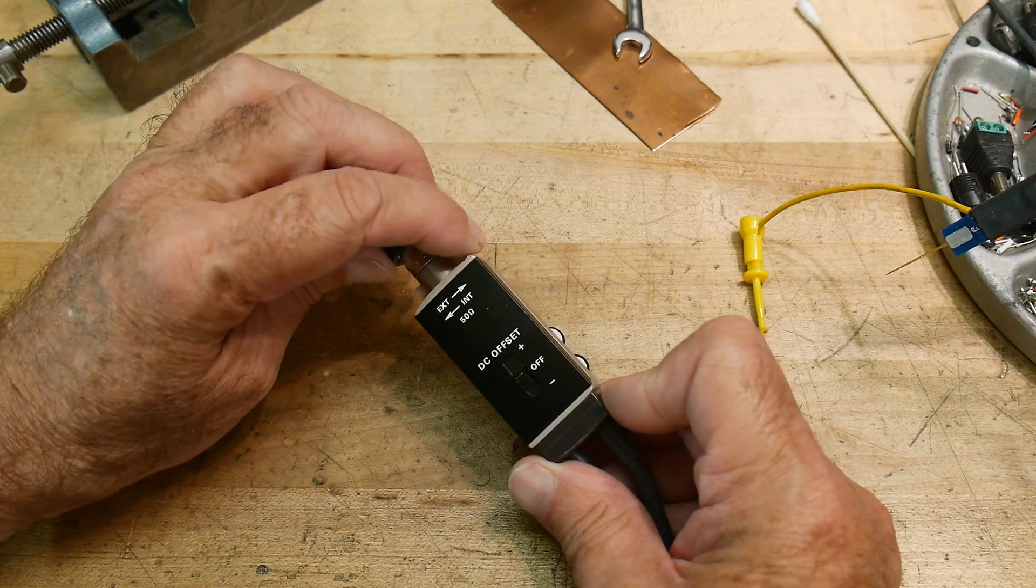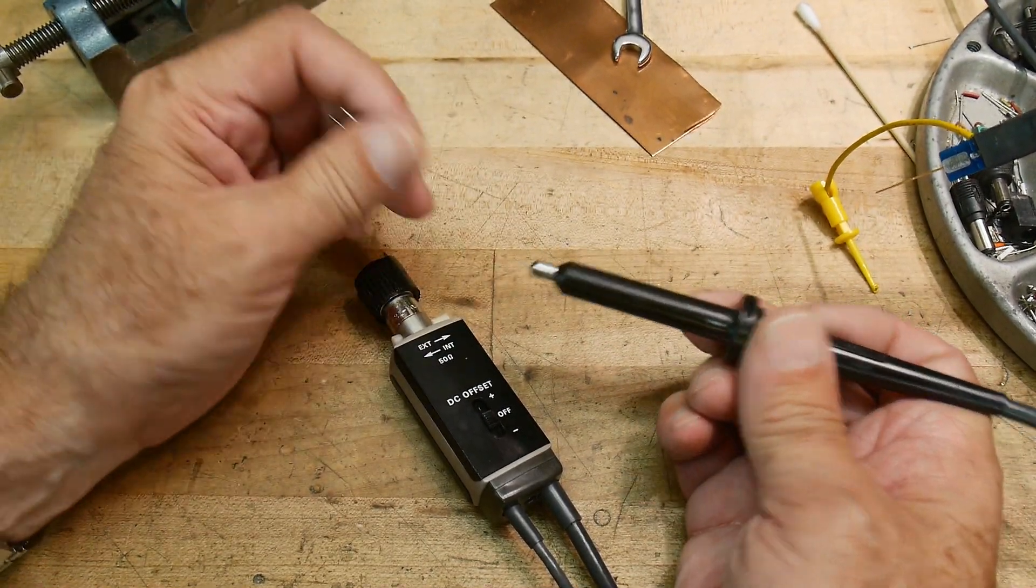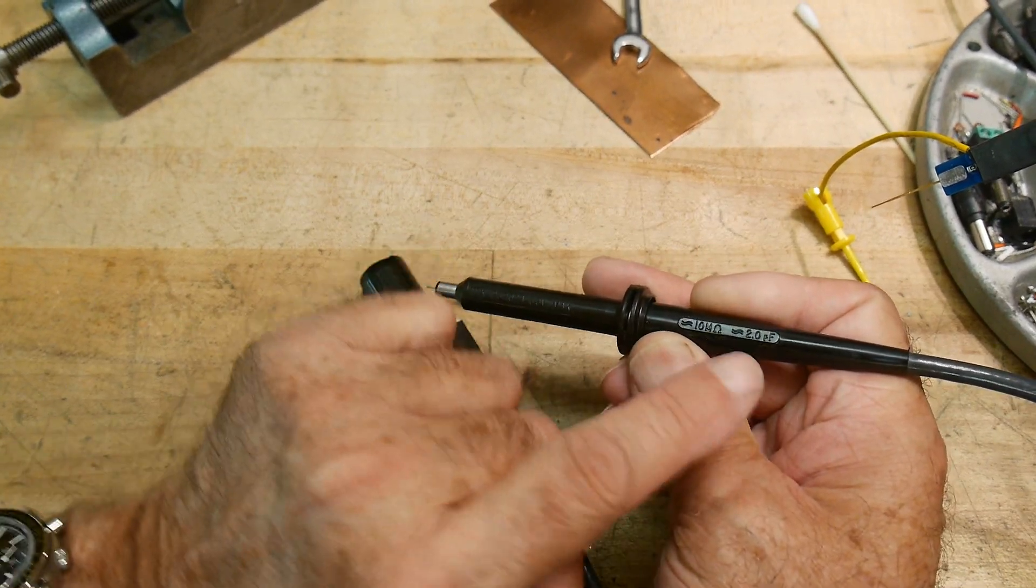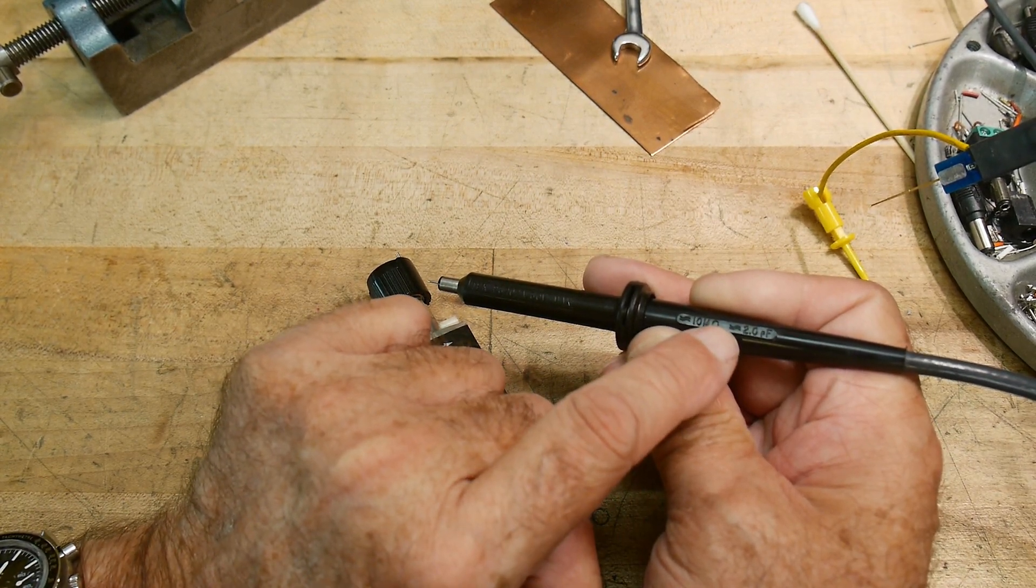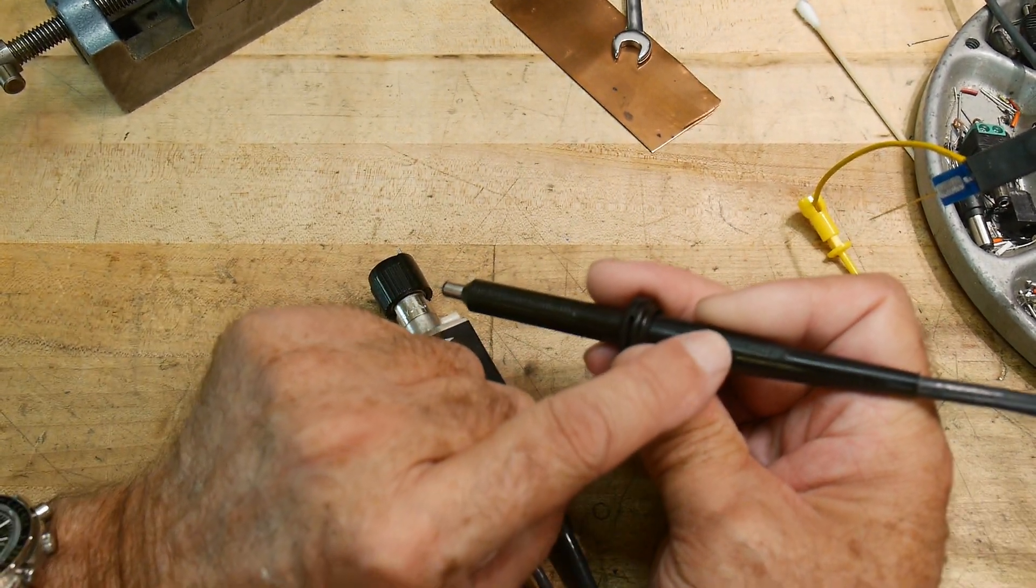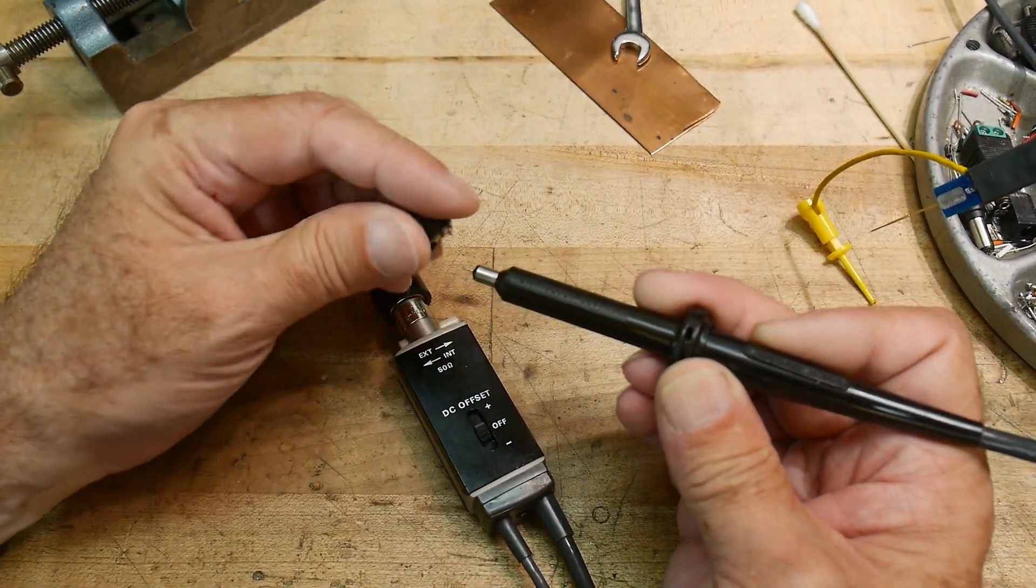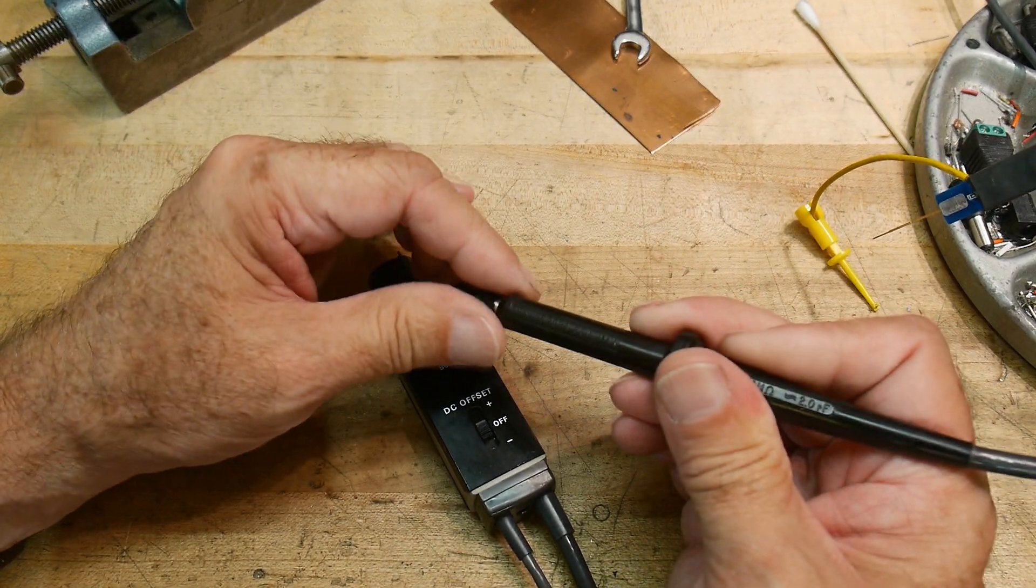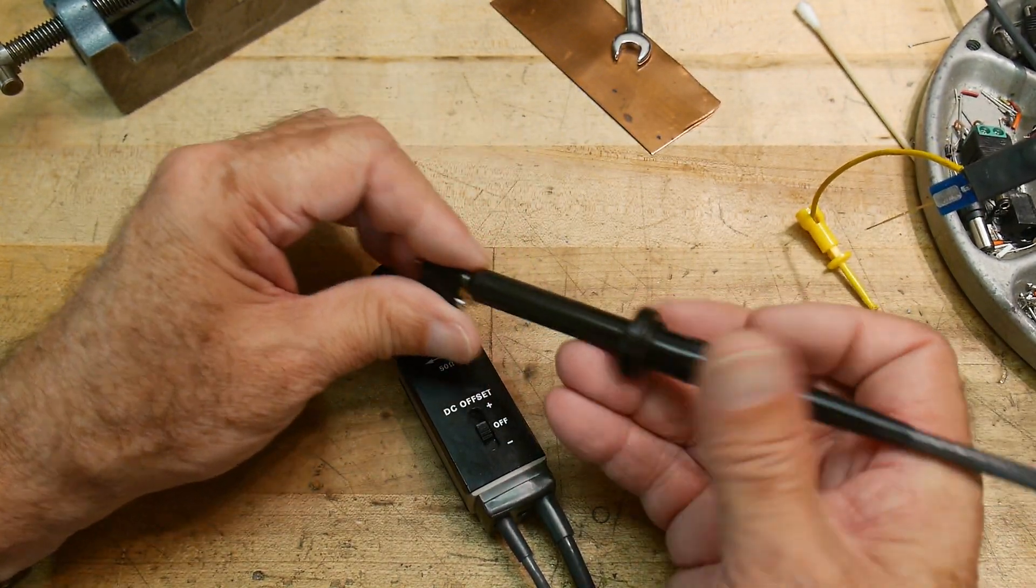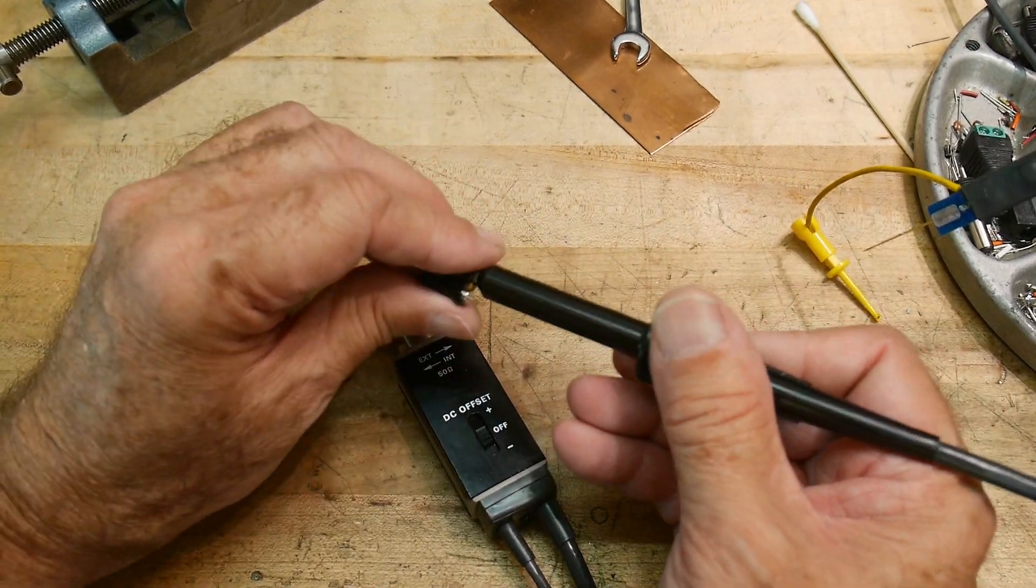The probe itself looks like this, pretty much the same. I'm using the same adapter for the ground. This one says 10 megahertz, 2 picofarad, so this is a little bit of an upgrade. 10 megaohms input resistance and only 2 puff, so it should be a little bit faster and a little bit less loading on the circuit. It says here 60 volts max, and again this is a one-to-one probe as they usually are.